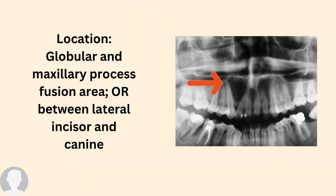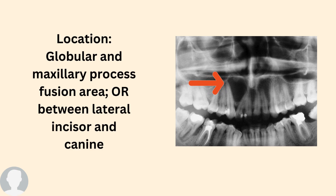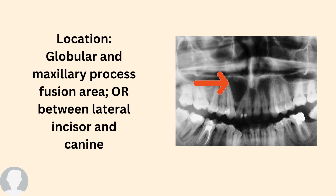Globulomaxillary cyst, as the name suggests, is located between the globular and maxillary process fusion area — or in other words, between the lateral incisor and the canine. In comparison, the nasopalatine duct cyst is located between the two maxillary centrals, and the lateral periodontal cyst is located between the canine and premolar. This cyst does not appear in the mandible.